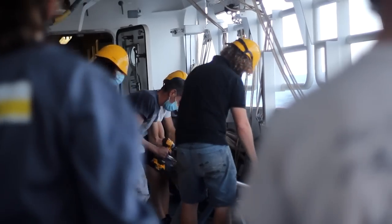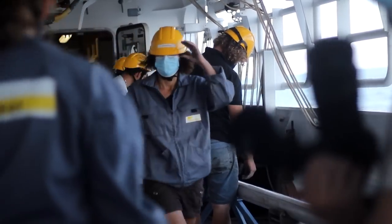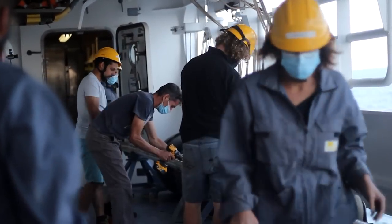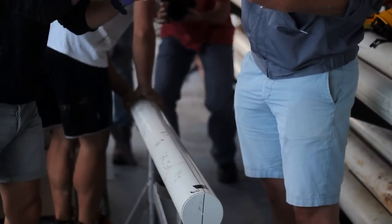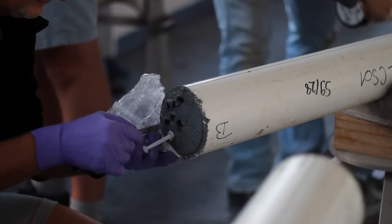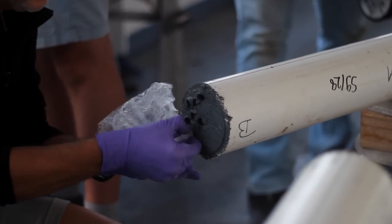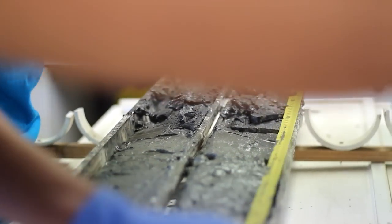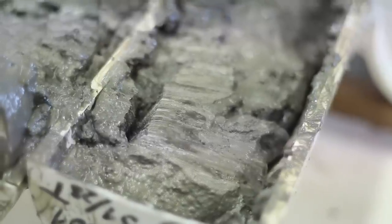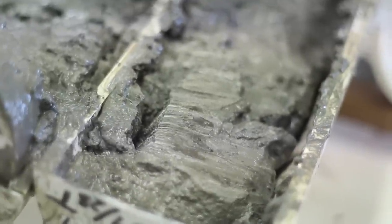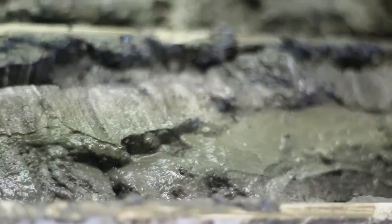Par la suite, les scientifiques pourront alors découper la colonne de sédiments, puis commencer à réaliser différentes mesures. Il sera alors possible de découvrir à quoi ressemblent les premiers mètres de sédiments sous la mer Noire, à savoir une glaise grisâtre, et qui pourraient renfermer des traces de gaz sous-marin.